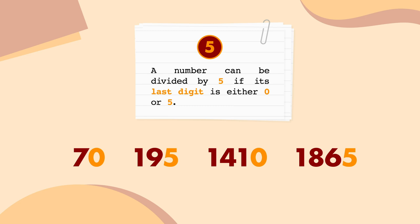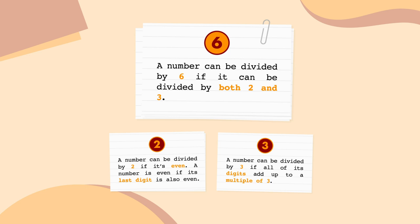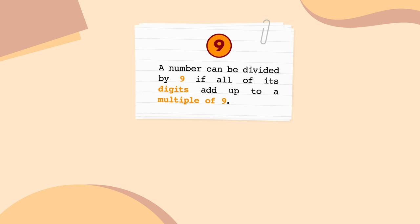A number can be divided by 6 if it can be divided by both 2 and 3 — so if both rules for 2 and 3 work, it can be divided by 6 as well. A number can be divided by 9 if all of its digits add up to a multiple of 9. For example, I know that 4167 can be divided by 9 because 4 plus 1 plus 6 plus 7 is equal to 18, which is a multiple of 9.